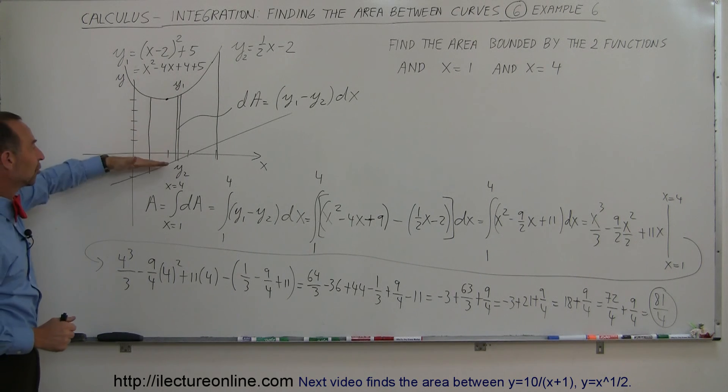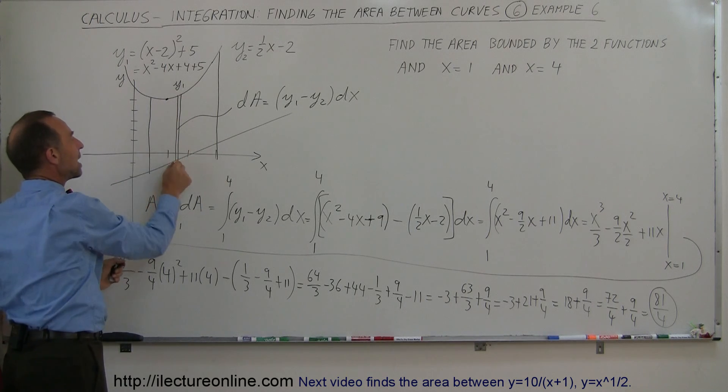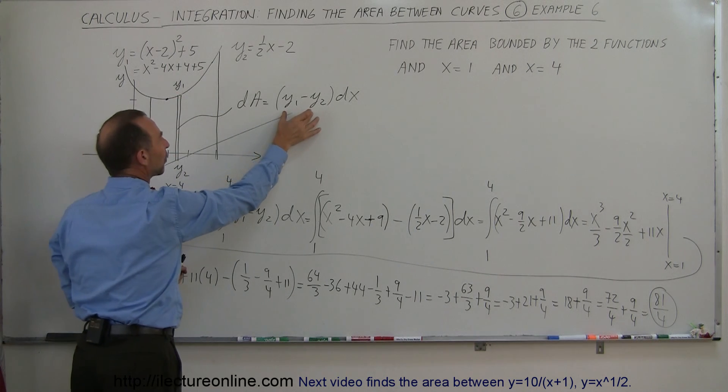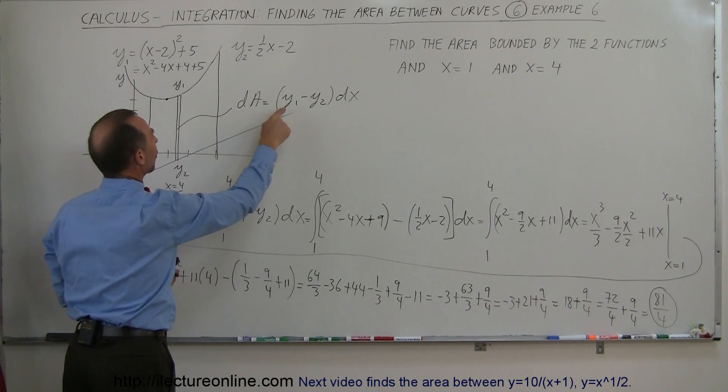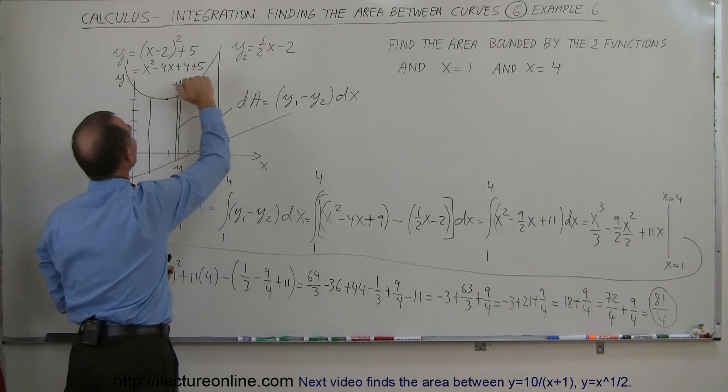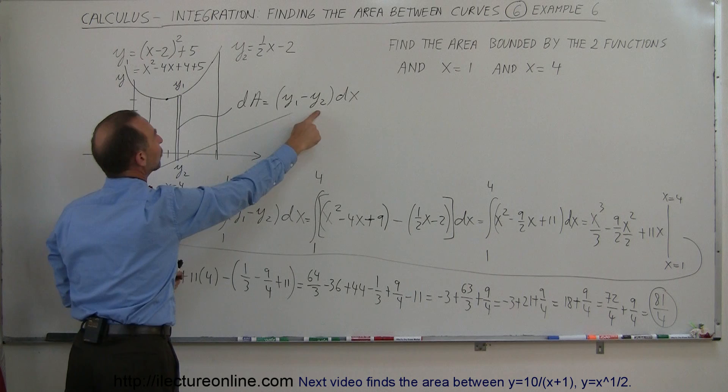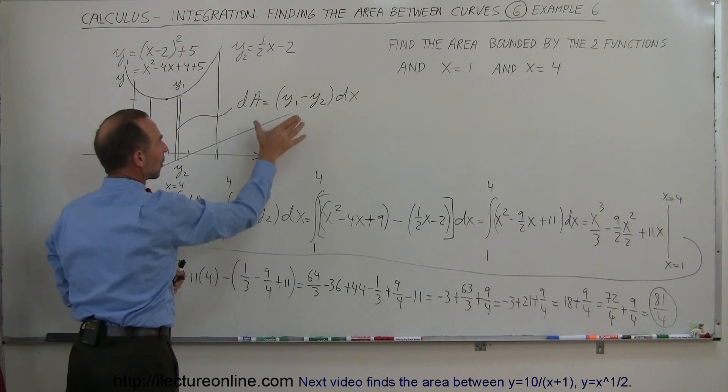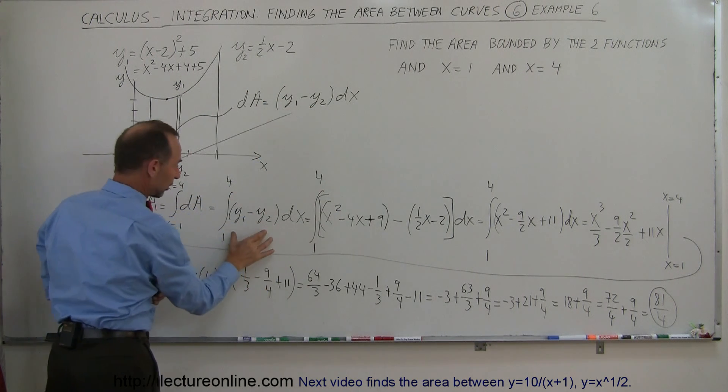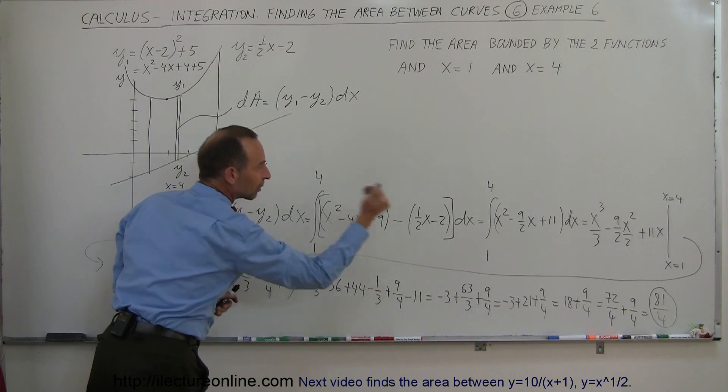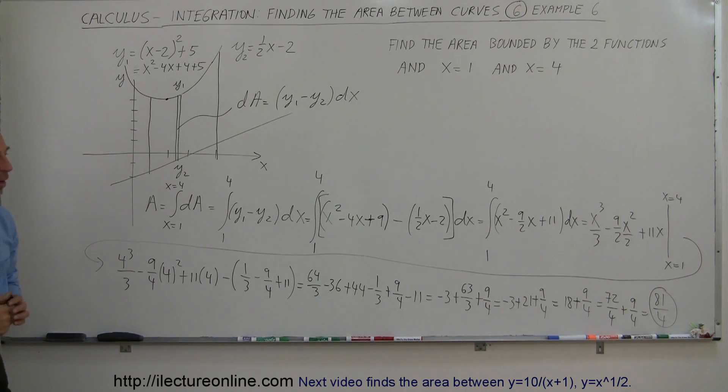Again, we have our two functions. We set up an area element dA. It's the height of the element, y1 minus y2, times the width dx. y1 is the upper limit, that's the parabola right here. y2 is a straight line right there. So we replace y1 and y2 in our integral. So we have an integral over the variable x. And that's how we attack that.